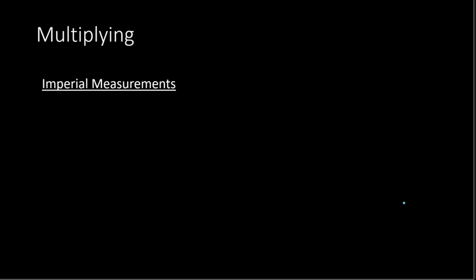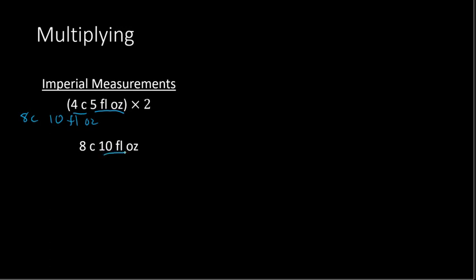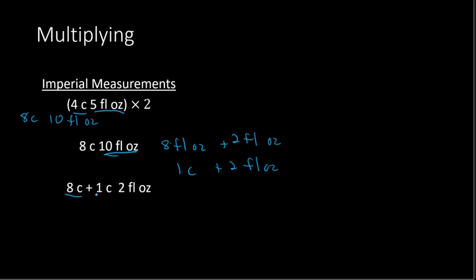Next, we're going to work with multiplying using both imperial and metric measurements. For imperial, our example is 4 cups 5 fluid ounces times 2. When you're multiplying, you multiply both units by 2. So 4 cups times 2 gives 8 cups, and 5 fluid ounces times 2 gives 10 fluid ounces. Then simplify if needed: 10 fluid ounces is more than 1 cup, since there are 8 fluid ounces in 1 cup. So 10 fluid ounces is 1 cup plus 2 fluid ounces. Adding 8 cups plus 1 cup gives 9 cups, so the final answer is 9 cups and 2 fluid ounces.